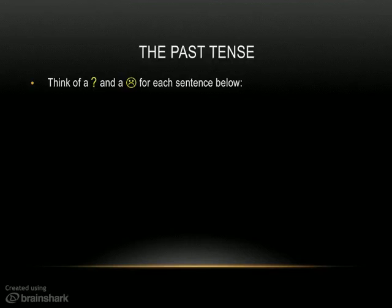Here are some examples. You're going to see some positive sentences. For each sentence, I want you to think of the question, and then think of the negative. I've used the same color scheme — yellow for the subject (onderwerp), blue for the infinitive or main verb, and red for the verb that you have to conjugate (vervoegen).